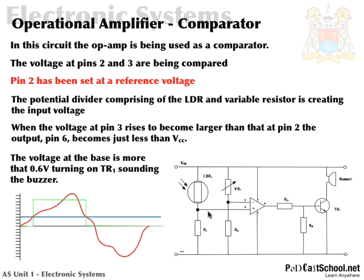When the non-inverting input is high, it'll be greater than the inverting input and we'll have a high output signal — that's when the transistor will turn on and the buzzer will buzz. In other words, this could be used as an alarm circuit. When light falls on the LDR, its resistance goes down, the voltage at this point goes up, and because of the high gain, we get the digital output and the transistor turns on, sounding the buzzer.